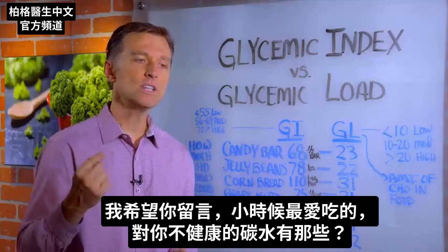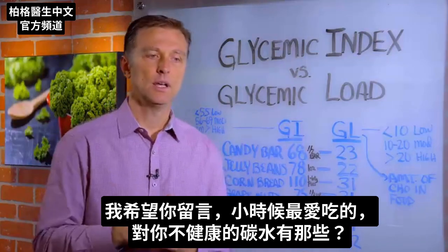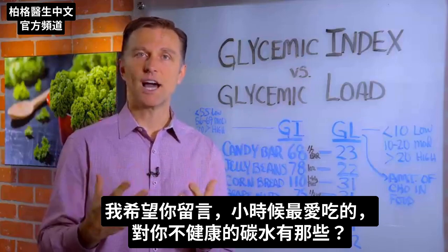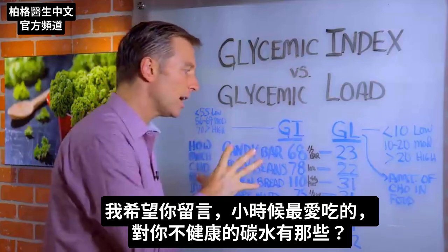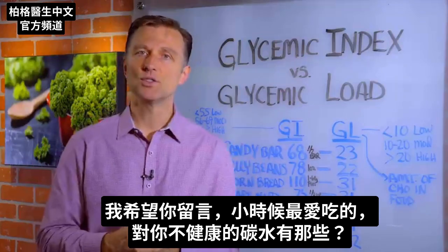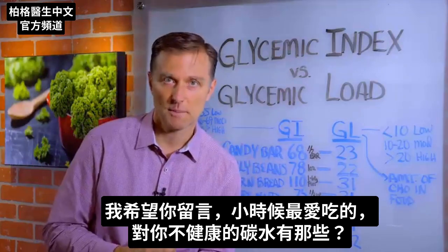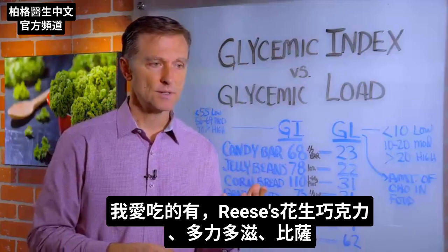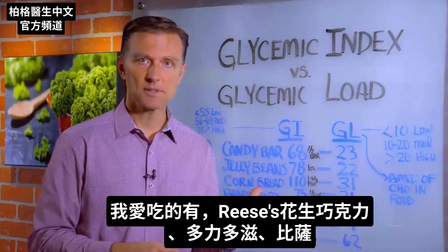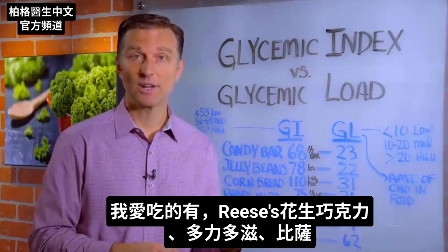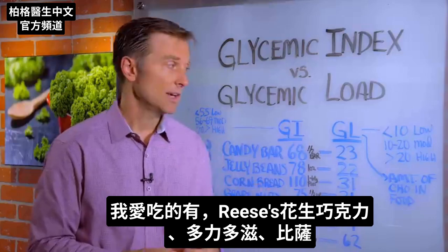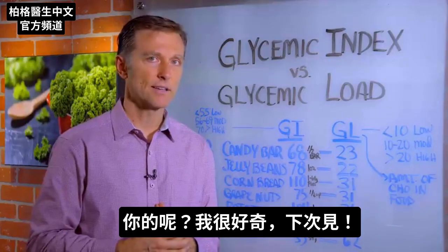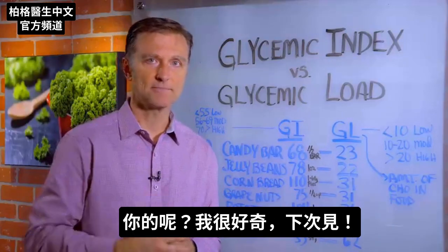I want you to type down the food that you loved and ate as a child that was a carbohydrate that wasn't too good for you. Mine was a combination of Reese's peanut butter cups, Doritos, and pizza. So what was yours? I'm curious. Talk to you later.